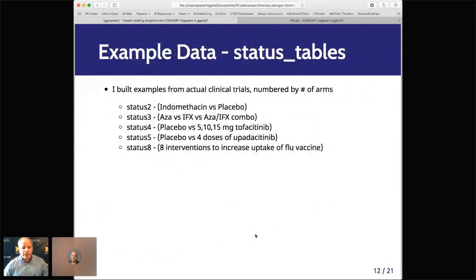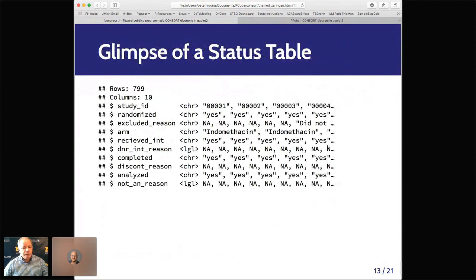Same with receive their intervention or didn't receive, completed and discontinued, analyzed and not analyzed. So I then built examples from actual clinical trials numbered by the number of arms. And the first four ones I participated in. And then I Googled PubMed to find one that had eight arms, just as another sort of outlier example, and built these out as status tables. And here's a glimpse of what, here's a two-arm status table that we did for post-ERCP pancreatitis. Basically, either you have a yes or an NA or text if you have someone who didn't receive the intervention.